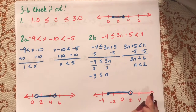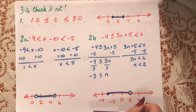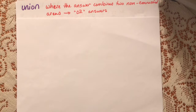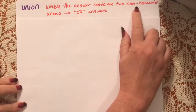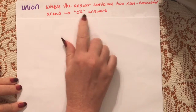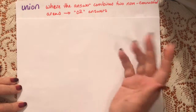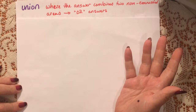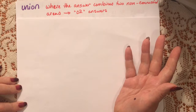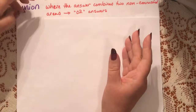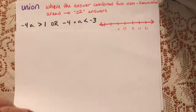Please make sure you ask if you have any questions at all. So what happens when our intersection does not overlap? That's called a union — it's where the answer combines two non-connected areas. These are the "or" answers. Where before we had "and" — it had to be higher than 7.2 and lower than 7.6 — these questions are "or."